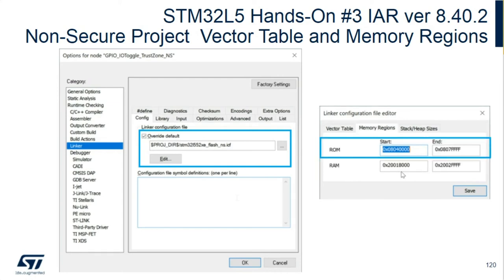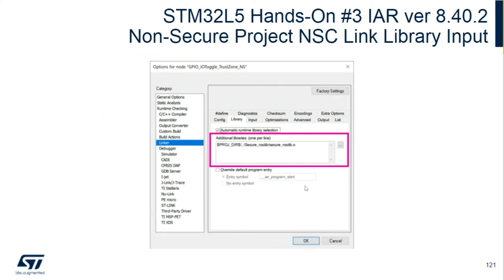There was 192KB allocated for secure SRAM and 64KB allocated for non-secure. Finally, the non-secure project needs to know where to find the secure_NSCLib.a file created by the secure project — that is an input to the non-secure project.